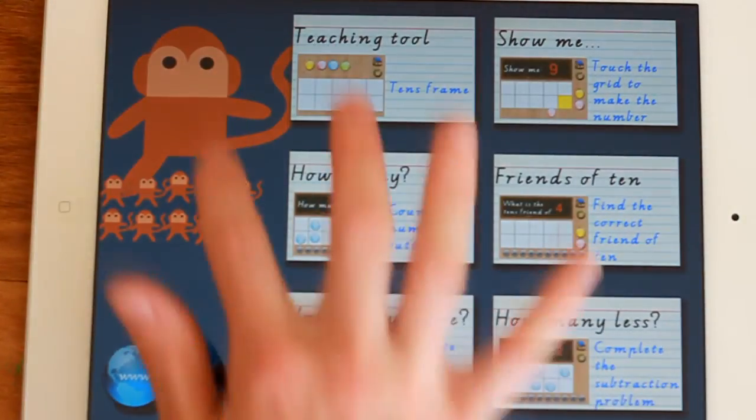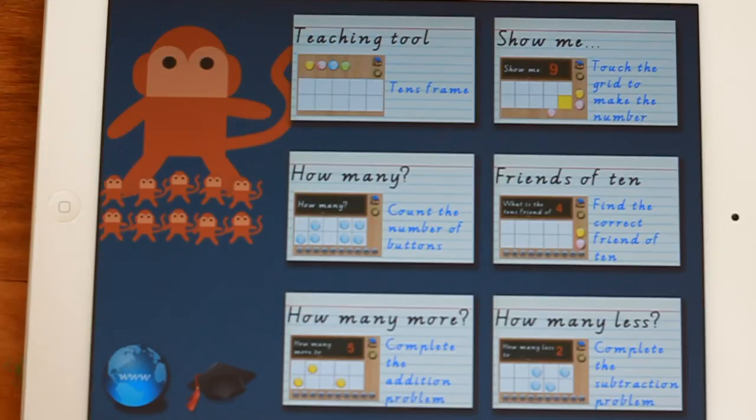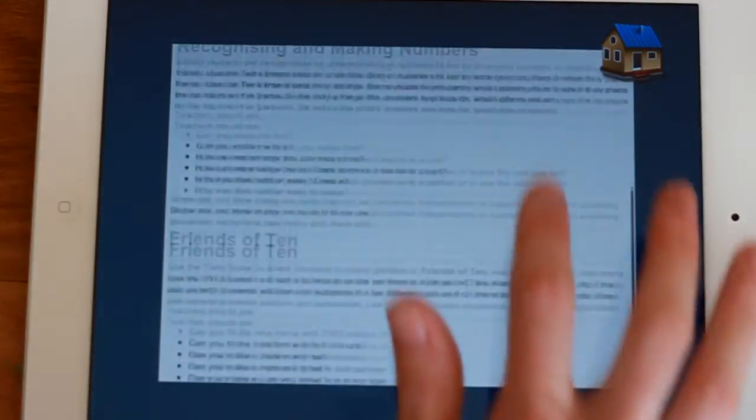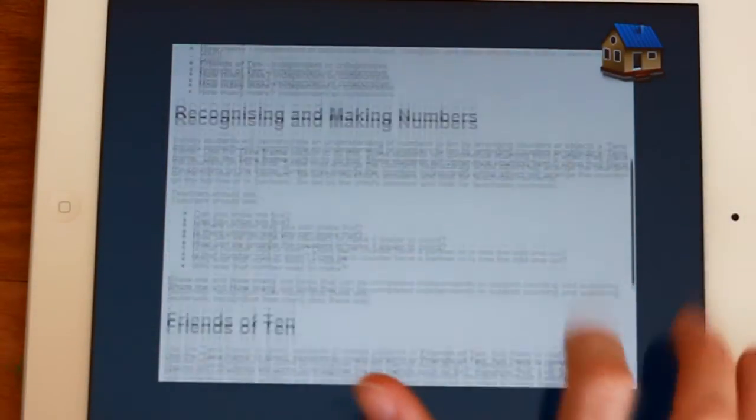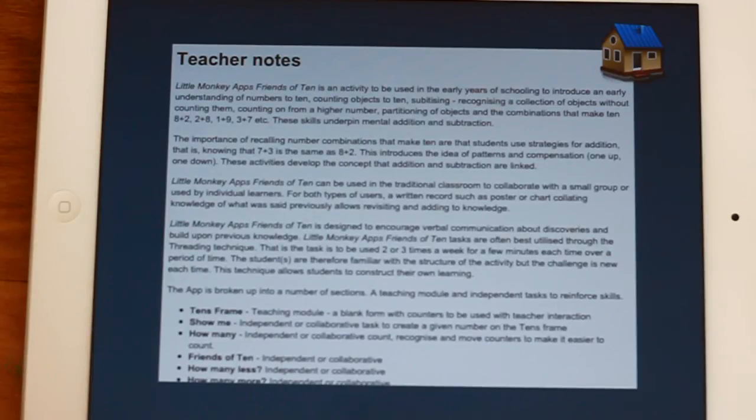Once again, you can click on the monkey. And don't forget the help section. One of the most important things that I think about this app is the threading technique. That it should only be used for a few minutes each time, and also that you use a chart or butcher's paper to make a list of those tens friends, or friends of ten, to aid the child. So there you go.